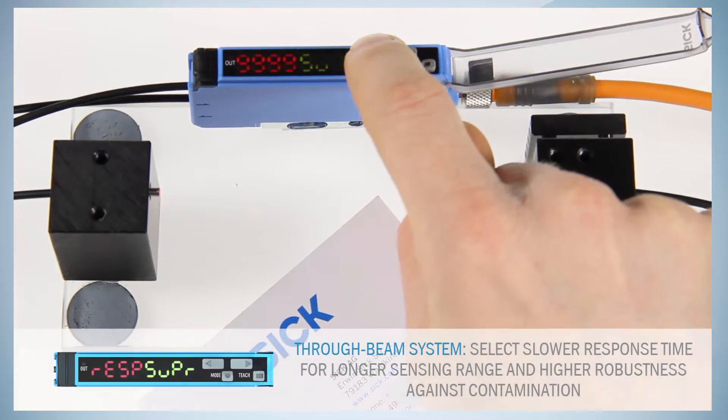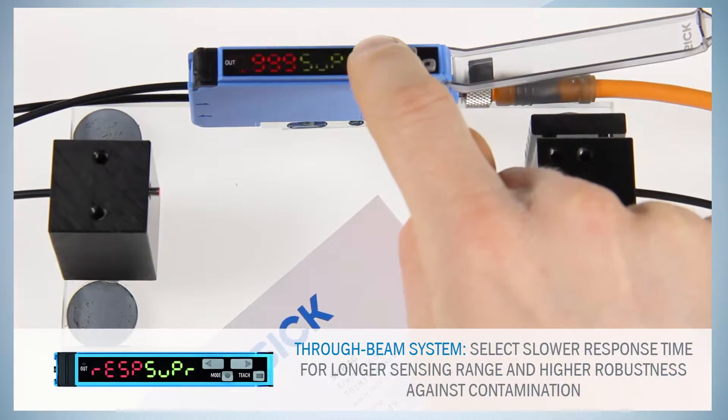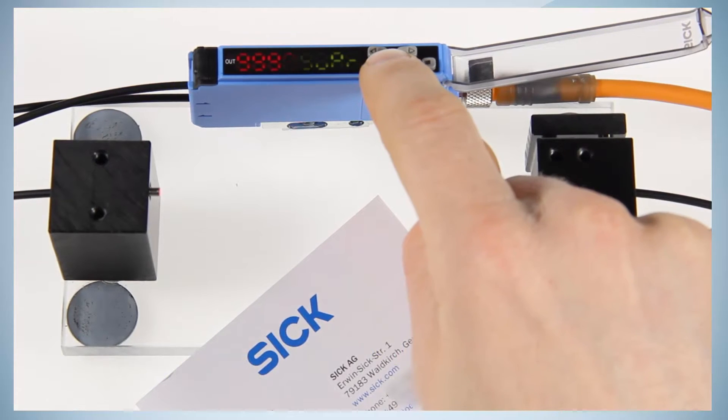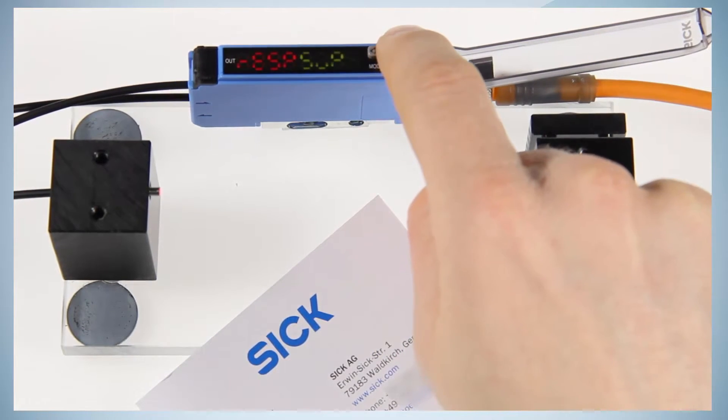Select the item super long response time of 8 milliseconds for highest functional reserve by using the plus or minus button. Confirm by pushing the mode button. Now leave the menu back to run mode.